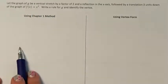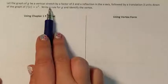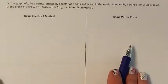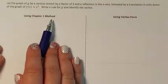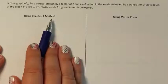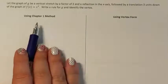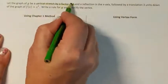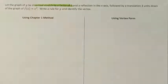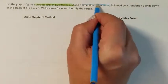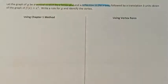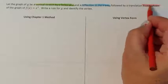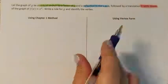If we were in Chapter 1, we had a method for solving this using Chapter 1 skills. We now have a method using our Chapter 2 skills as well, so we're going to do it both ways. We need to identify the three different transformations: first, a vertical stretch by a factor of 2; second, a reflection across the x-axis; and third, translate three units down.